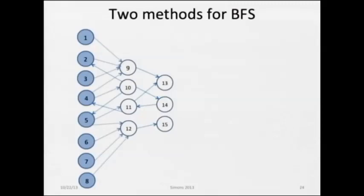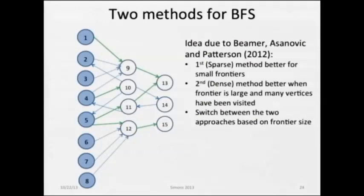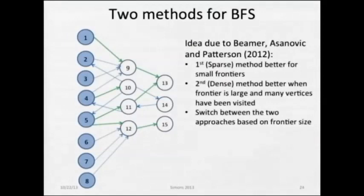There's a technique developed at Berkeley—the student Beamer did a lot of the work—that says if the number of vertices in the frontier is very small, you want a sparse representation and only operate on the vertices in the frontier. If the frontier is large—about 10% or more—you want to go the opposite direction: look at all vertices and use a bitmask representation for the vertex subset. This gets a lot of efficiency improvement, and with this we basically compete with the very highly optimized Beamer-Patterson code.